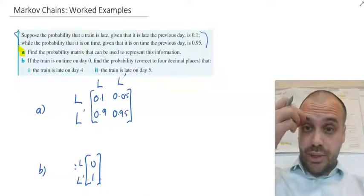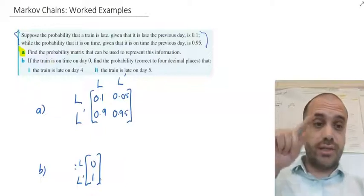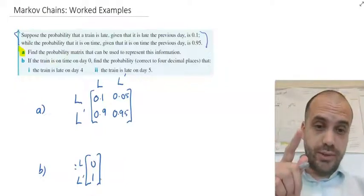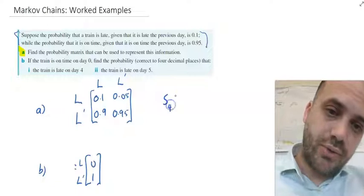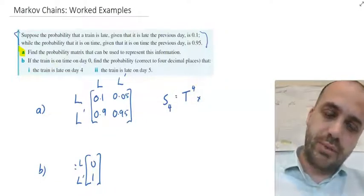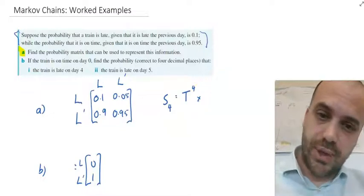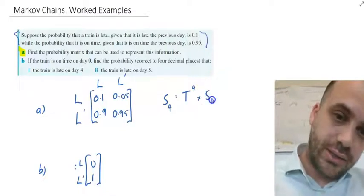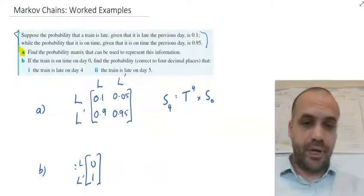Find the probability correct to four decimal places that the train is late on day 4. So state on day 4 will be equal to the transition matrix to the power of 4 times the initial state matrix, initial state, state 0.